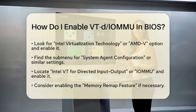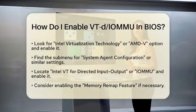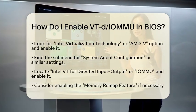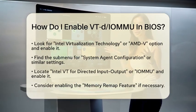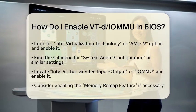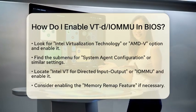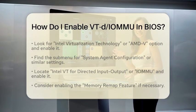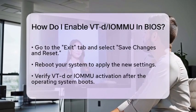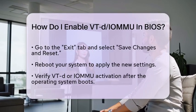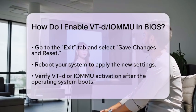Still under the Advanced tab, find the submenu labeled System Agent Configuration, or something similar related to chipset or CPU settings. Look for the option named Intel VT-d for Directed Input-Output, or IOMMU for AMD systems. Change this setting from Disabled to Enabled. In some cases, you may also need to enable the Memory Remap feature, which can usually be found in the same or a nearby menu. This step may be necessary to fully support VT-d and IOMMU.